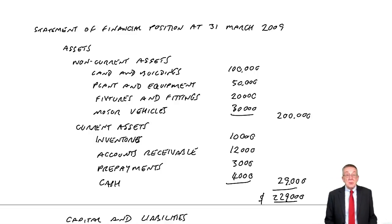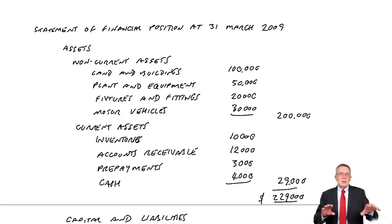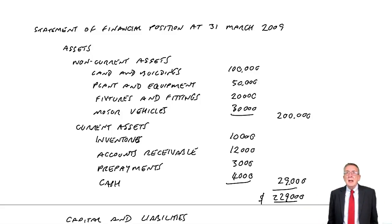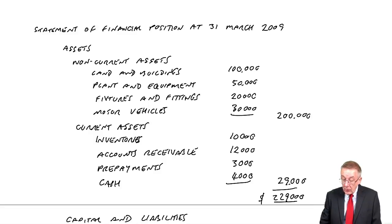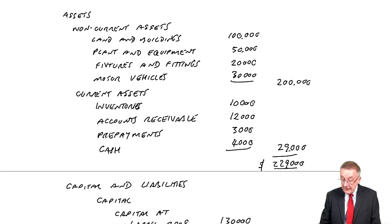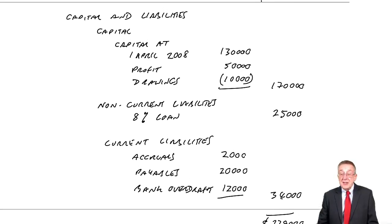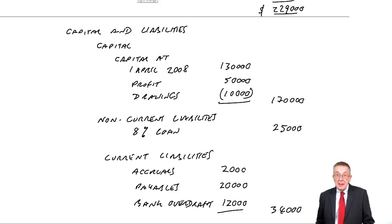The layout is basically as we had in my example in the last lecture. The standard layout these days is to list all the assets — what the business owns — and then below to list what the business owes to the owner, the capital, and to other people.